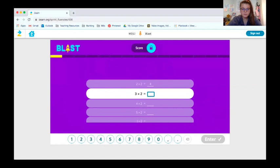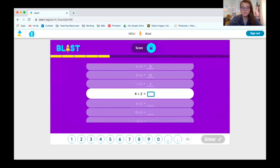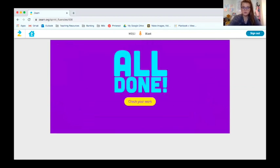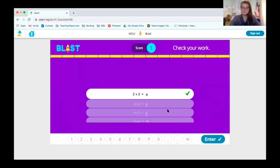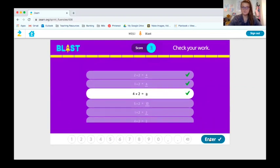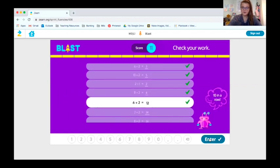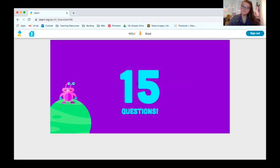Two times two is four. Three times two is six. Four times two is eight. Five times two is 10. One times two is two. Four divided by two is two. Six divided by two is three. Ten divided by two is five. Two divided by one is two. Eight divided by two is four. Six times two is 12. Seven times two is 14. Eight times two is 16. Nine times two is 18. Ten times two is 20. Okay, so I did as fast as I could. And now I'm going to check my work. Oh, I got five in a row. Ten in a row. Fifteen in a row. Yay. Okay, so now I get a bonus round.